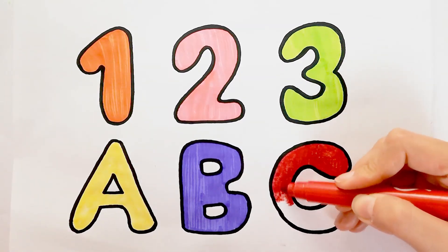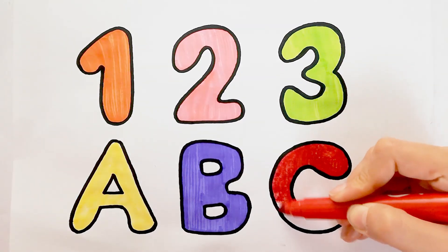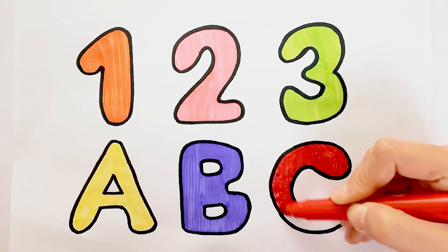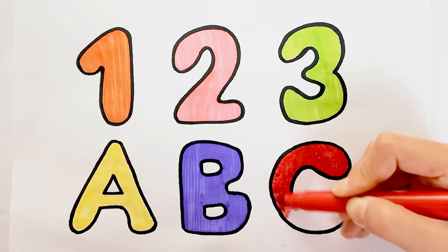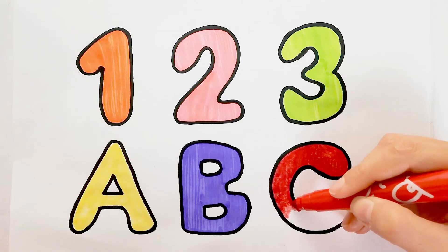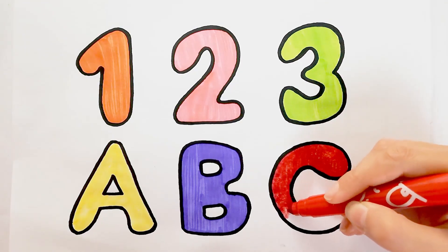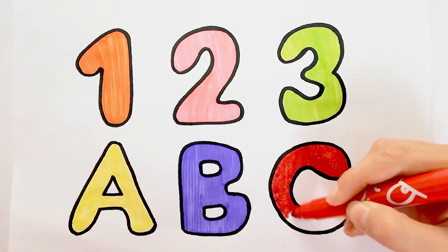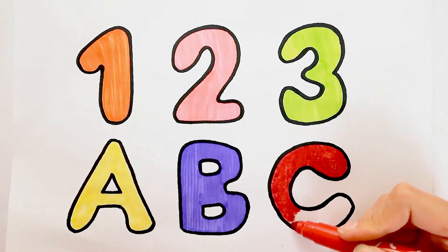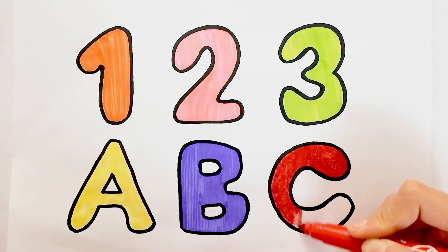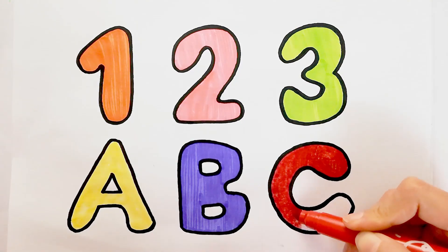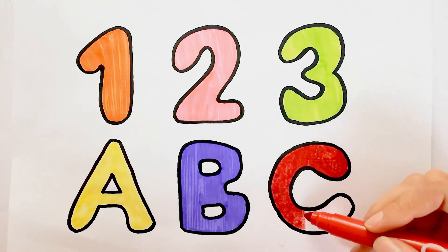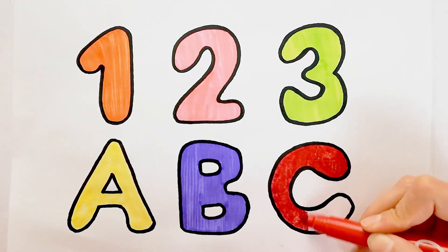A, B, C, D, E, F, G, H, I, J, K, L, M, N, O, P, Q, R, S, T, U, V, W, X, Y, and Z. Now I know my ABCs, next time won't you sing with me?